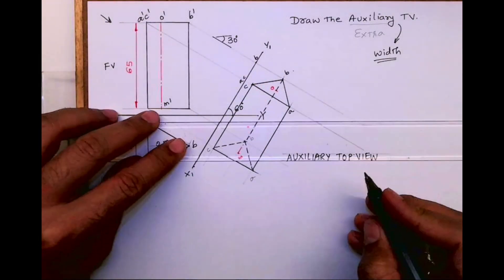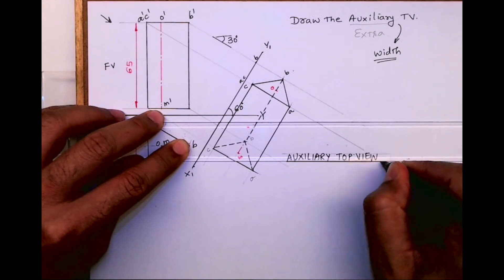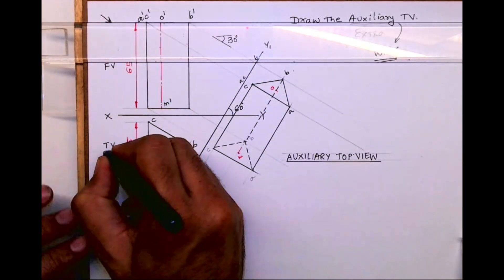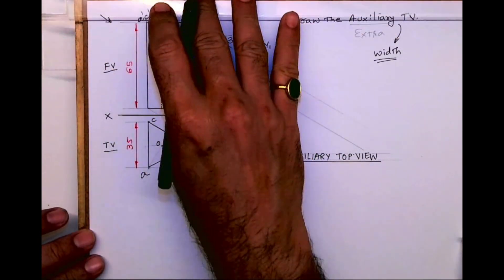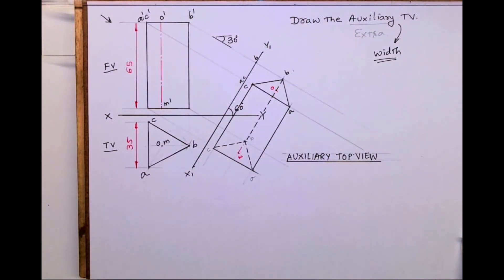So this is auxiliary top view. Front view, top view, and auxiliary top view which is next to top view. Thank you.